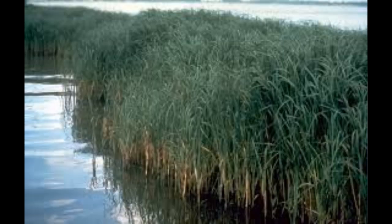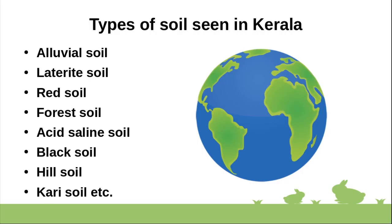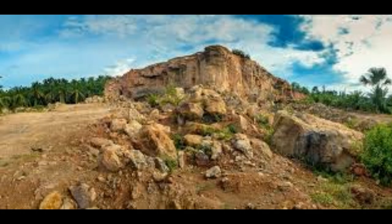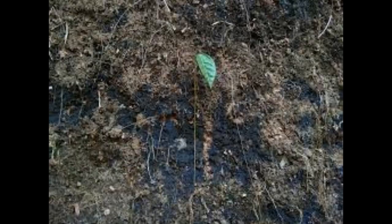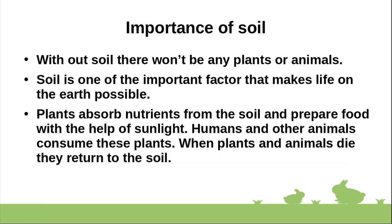The important types of soil seen in Kerala are alluvial soil, laterite soil, red soil, forest soil, saline soil, hill soil, black cotton soil, and curry soil. Next, we have to discuss about the importance of soil.